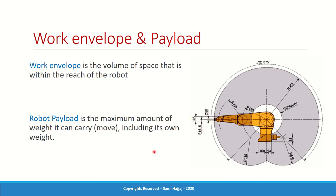The work envelope, or robot envelope, refers to the volume of space the robot can reach — similar to stretching your arm and making a dome above your head. This space is very important for floor management and space allocation. You don't want to place another machine, station, or person within this work envelope, as there is a risk of the robot hitting the machine or injuring a person. The work envelope must be allocated with appropriate safety clearance so the robot cannot be disturbed, cannot hurt anyone, and cannot damage another machine.